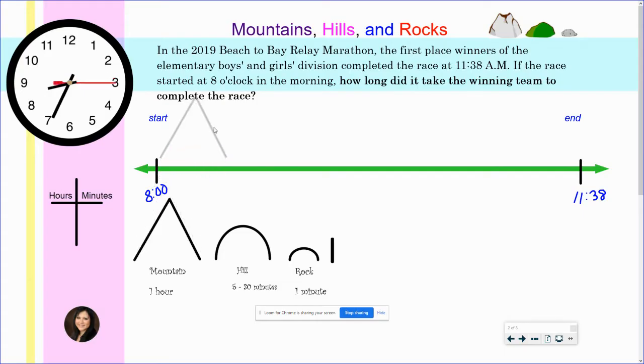So I am going to go ahead and place my symbol here on the number line. I am going to place a tick mark right where my mountain is and I am going to record the time 9 o'clock. I know from 8 to 9 is one hour.